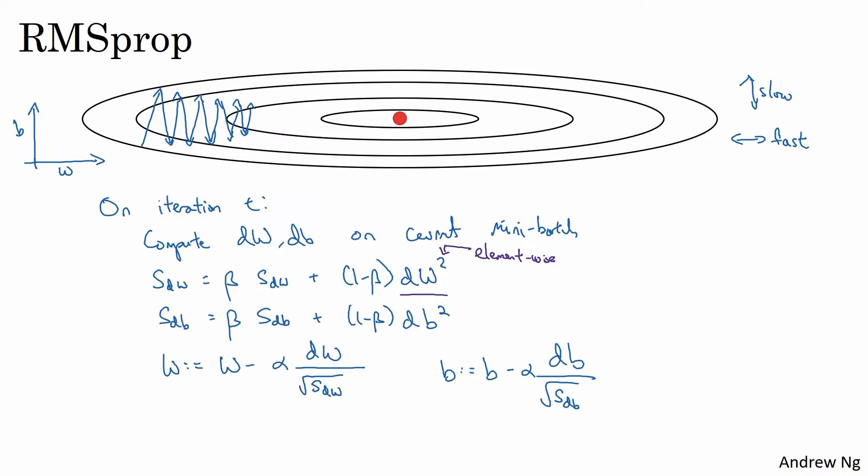So let's gain some intuition about how this works. Recall that in the horizontal direction or in this example, in the w direction, we want learning to go pretty fast. Whereas in the vertical direction or in this example, in the b direction, we want to slow down or to damp out the oscillations in the vertical direction.